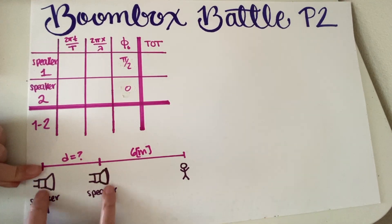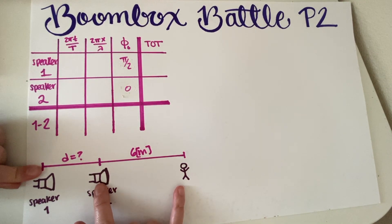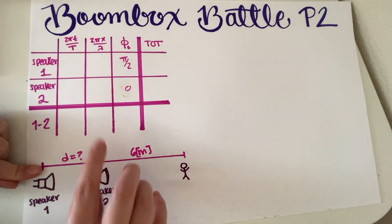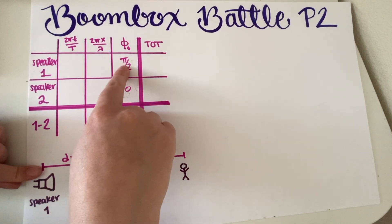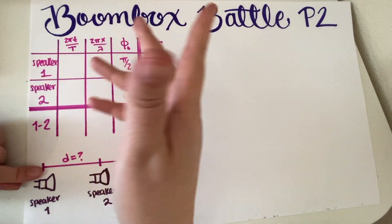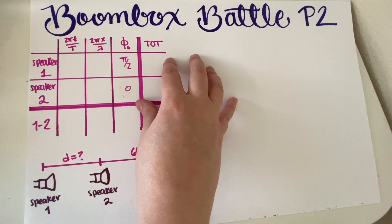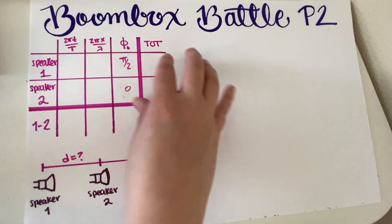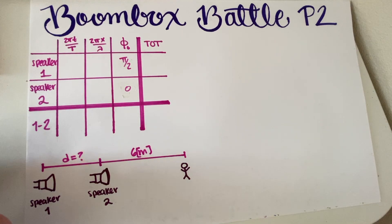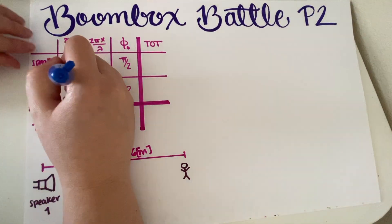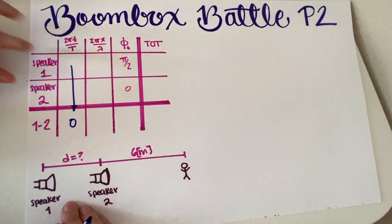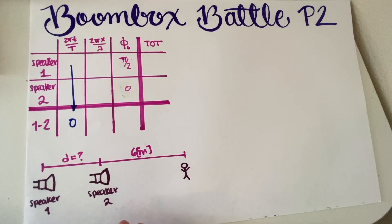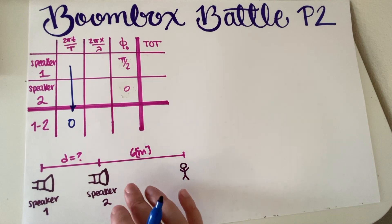This is Part B on a new page because the setup is completely different. We have a distance d between the speakers, 6 meters from you to Speaker 2, and Speaker 1 is the farthest one. Speaker 1 is ahead by pi/2 according to the problem, and that's already included in our setup. We want to find d, so let's do everything in terms of d.